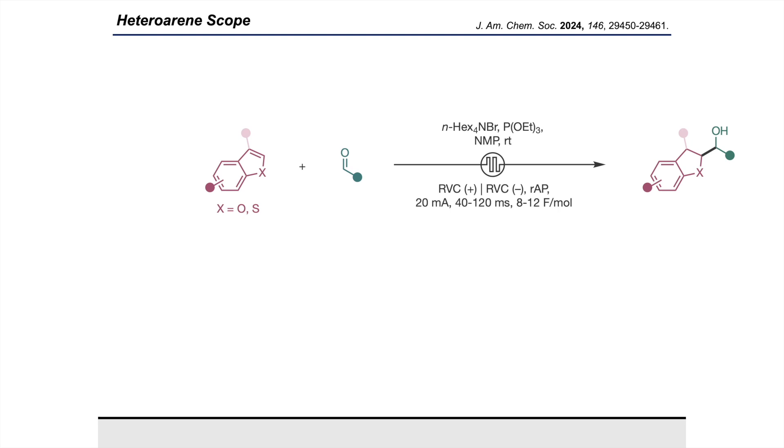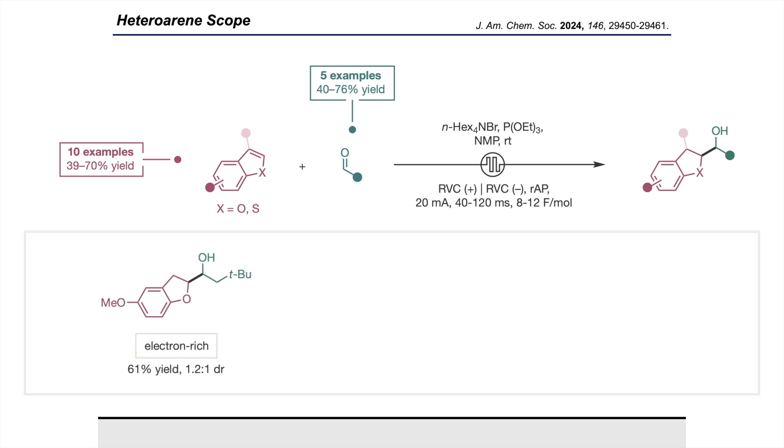Encouraged by this remarkable compatibility, we then showed this protocol could indeed be extended to heteroaryl systems under slightly modified conditions. We were able to affect the dearomative functionalization of heteroaryls via their C2-C3 radical anions. We showed compatibility with 10 examples of benzofuran and benzothiophene derivatives as well as five examples of various alkyl aldehydes. Again, we showed compatibility with both electron-rich and electron-poor heteroaryls. The reaction was amenable to the pharmacophoric tetrahydropyran scaffold, and it showed excellent chemoselectivity for reduction of just the C2-C3 pi bond with no protodehalogenation observed for fluorine-containing heterocycles.